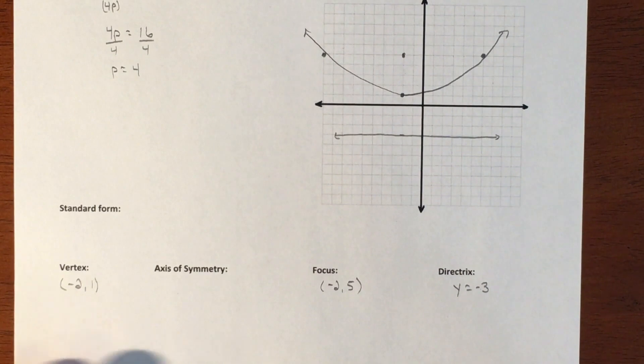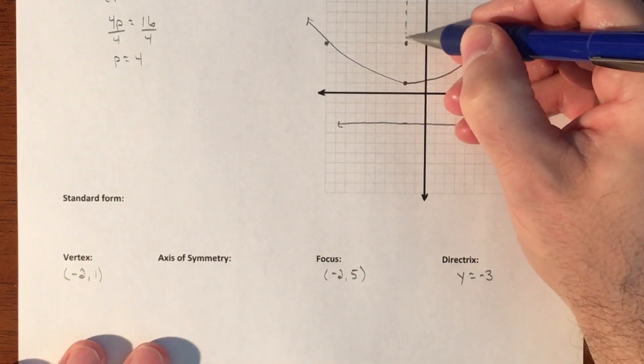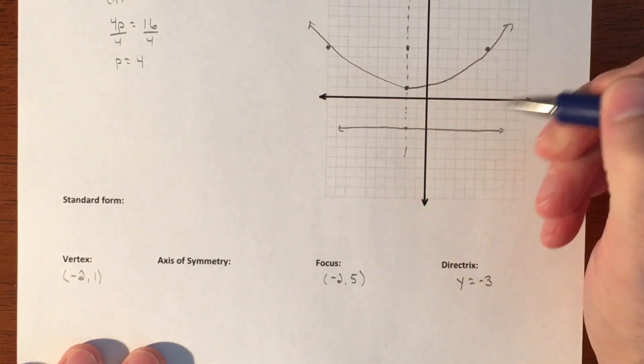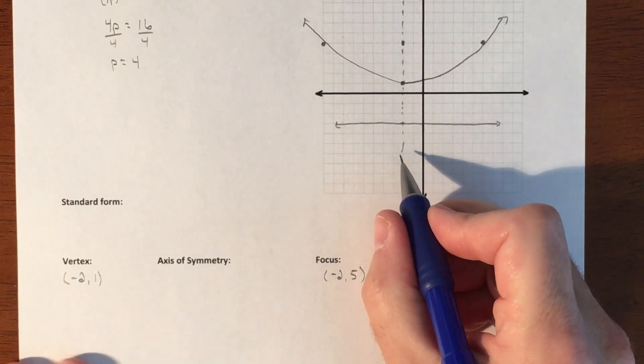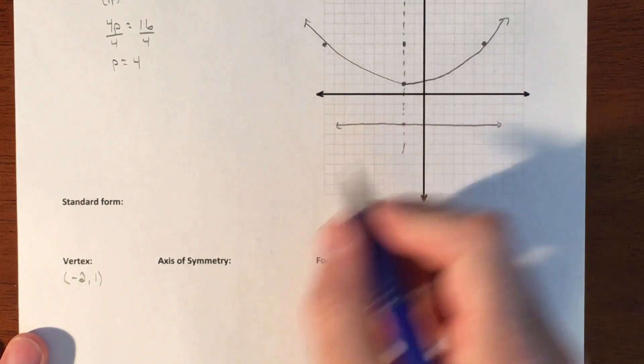Our axis of symmetry is this line passing right through the middle. That is a vertical equation, so we're looking at that equation being x equals negative two is what it crosses.